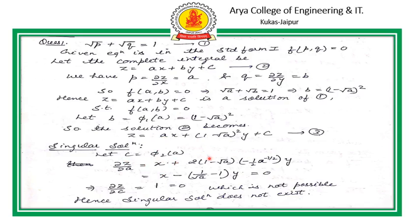Let C be a function of arbitrary constant A. For the singular integral, ∂Z/∂C equals 0 means 1 equals 0, which is not possible. So the singular solution does not exist in this question. For the general solution, the general integral is obtained by elimination of A between equation number 3 and ∂Z/∂A equals 0.